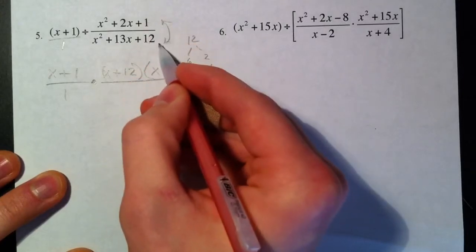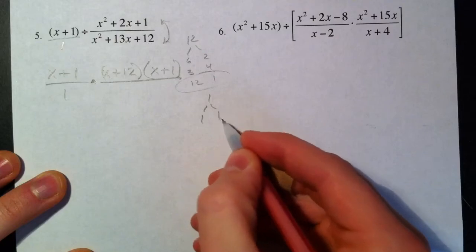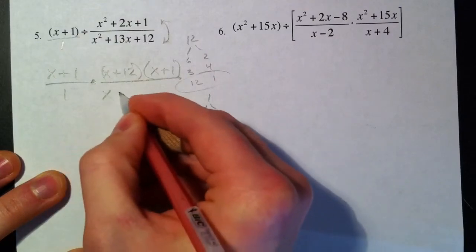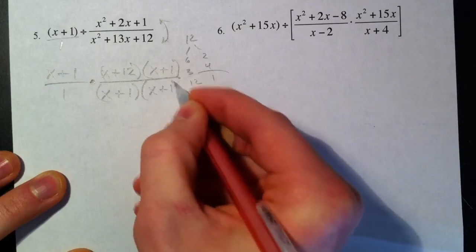Our X squared plus 2X plus 1 now comes to the bottom. What multiplies to 1 and adds to 2? Well, nothing much, it's pretty simple: 1 and 1. X plus 1, X plus 1.